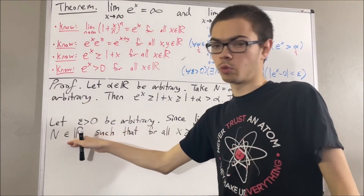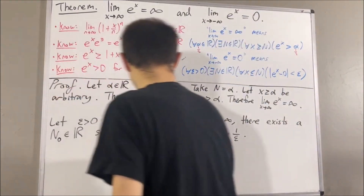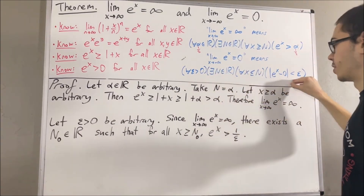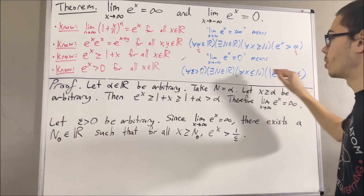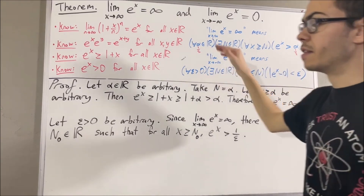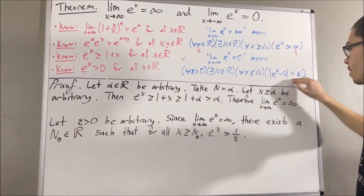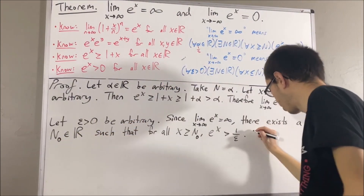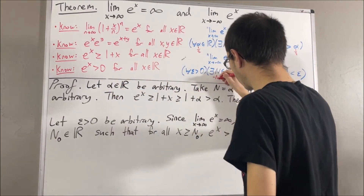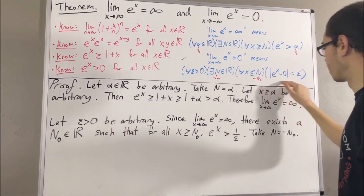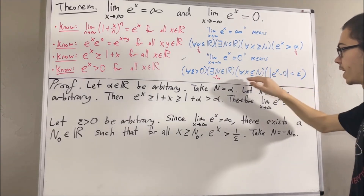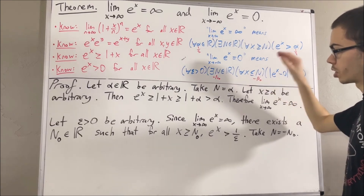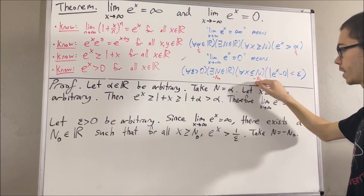We can call this real number capital N0. Our goal is to find a real number capital N such that the statement is true. The claim is, if we take capital N to be the negative of capital N0, then the statement will be true. So taking capital N to be negative capital N0, we proceed to prove the statement is true. Since we're trying to prove a statement about every real number x less than or equal to negative capital N0, let's give ourselves an arbitrary such x.